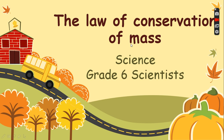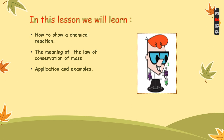Let's begin. In this lesson we will learn first how to show a chemical reaction — how can I describe a chemical reaction. Then we will revise the meaning of the law of conservation of mass — what is the meaning of the law of conservation of mass. And finally at the end we're going to make some applications and examples to make sure that we have understood very well.